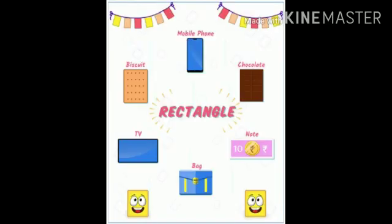Let us now see the various objects that are rectangle in shape. Mobile, phone, chocolate, note, bag, TV, biscuit are rectangle in shape.